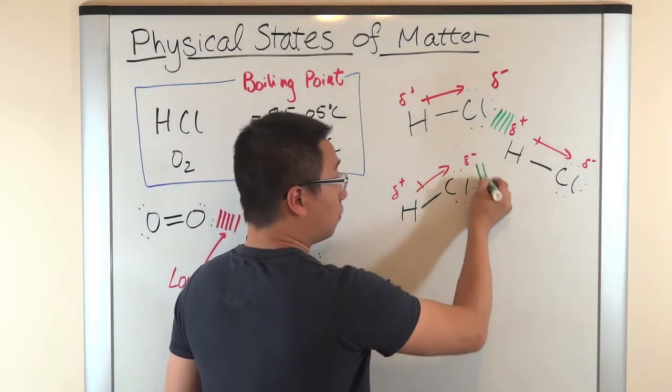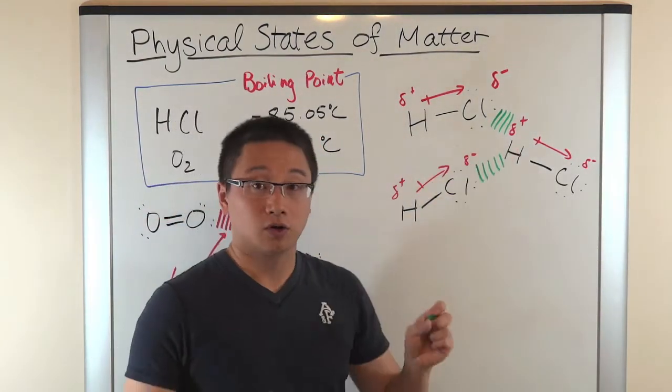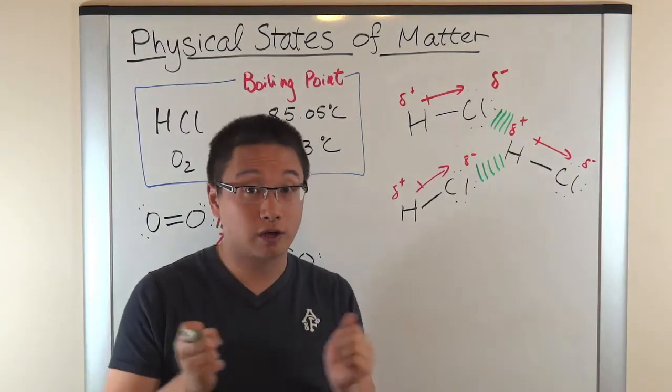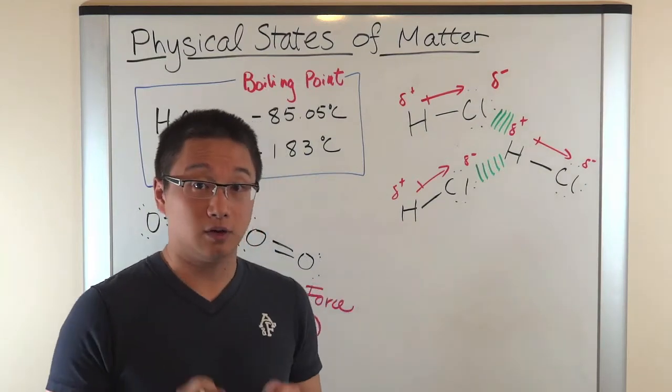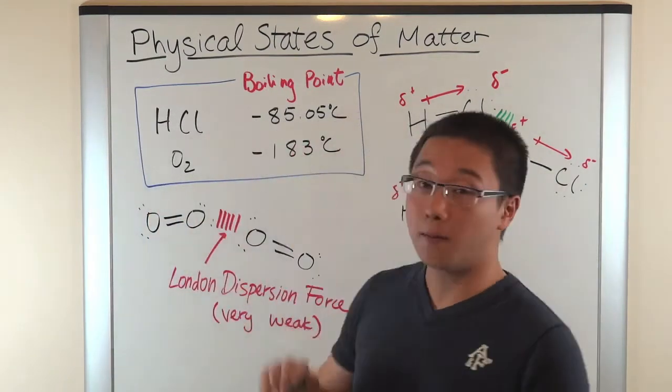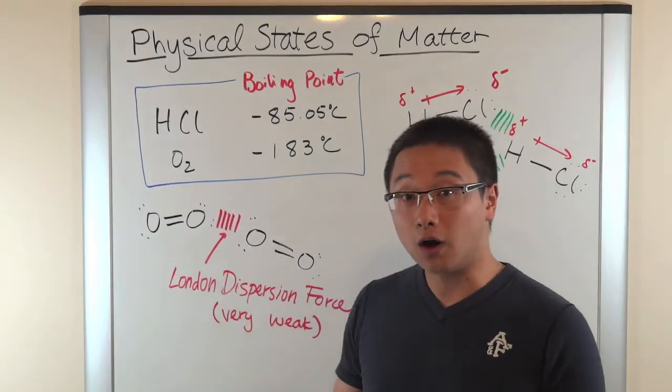And then, the chlorine right here will also attract with the hydrogen right here. So, you can see this kind of mutual attraction between the molecules. And this is the reason why we have a much higher boiling point for hydrogen chloride compared to O2.